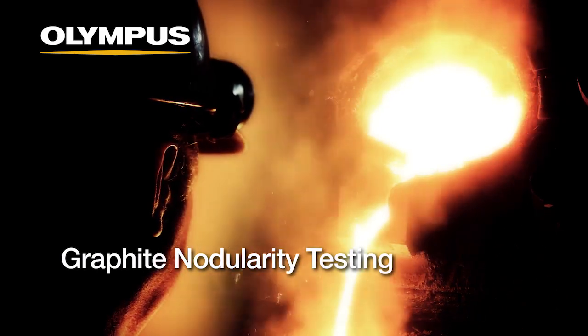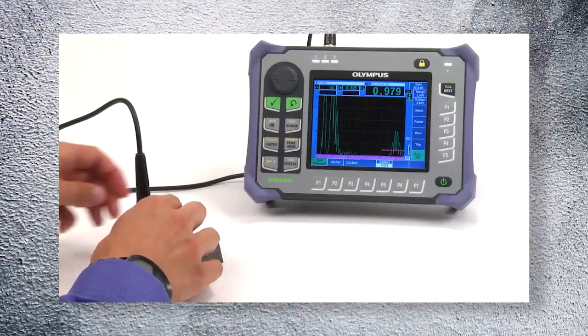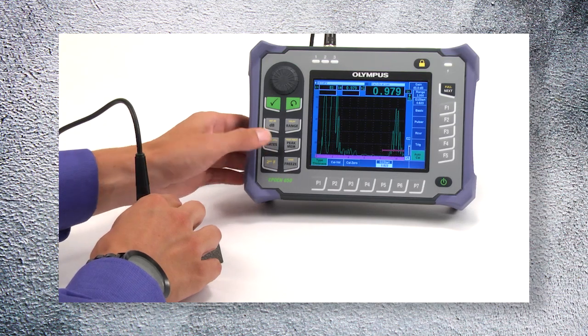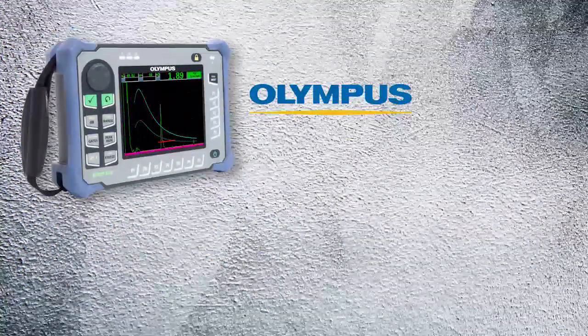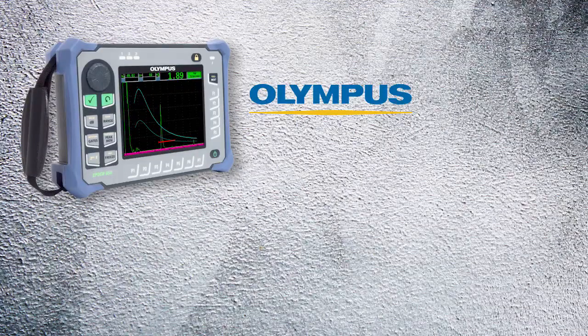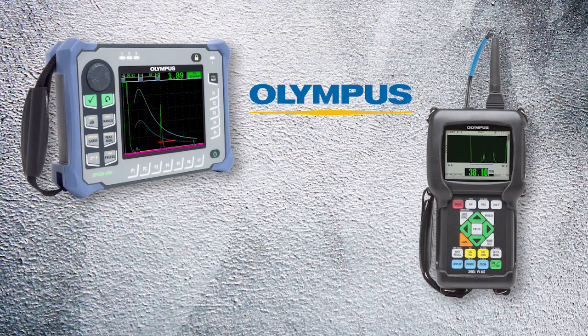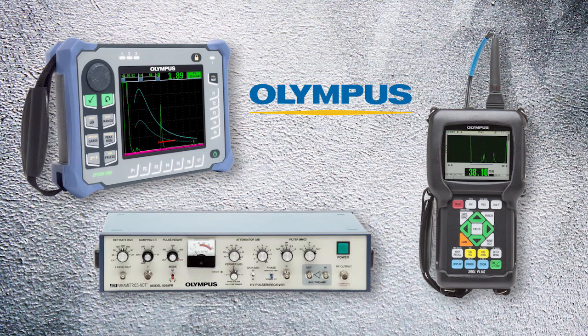Graphite nodularity testing in cast iron can be done with any instrument that is capable of measuring sound velocity. This includes an Olympus ultrasonic flaw detector, ultrasonic thickness gauge, or a pulsar receiver system.